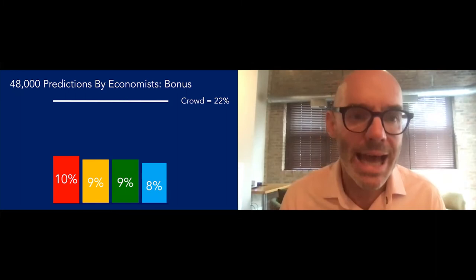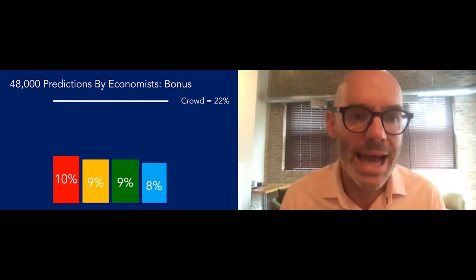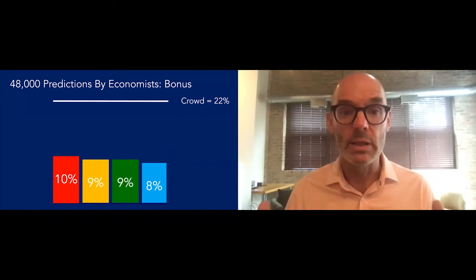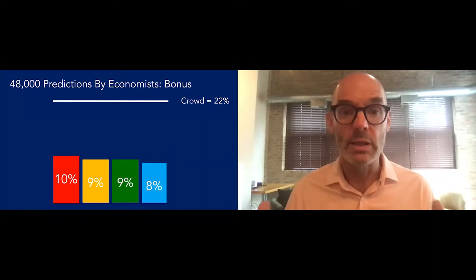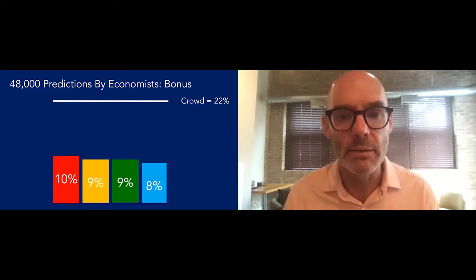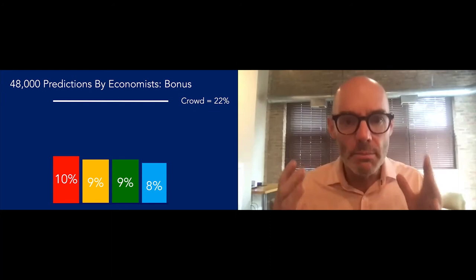Here's data from 48,000 predictions by professional economists. The very best economist was 10% better than an average economist. The second best economist was 9% better. Third best, 9% better. Fourth best, 8% better. The crowd of economists, in each one of these predictions there was typically about 40, was 22% better. What's just crazy about this is the best economist is 10% better, second best is 9% better. If you just average those two, you do almost 17% better. Why? Because they're different. What you want is smart people who think differently.